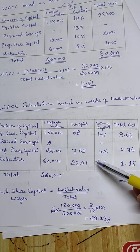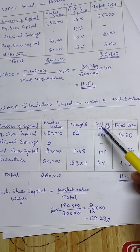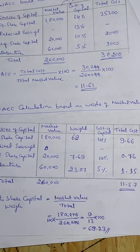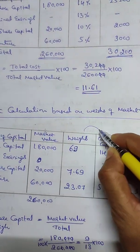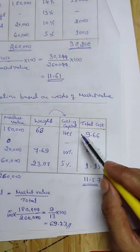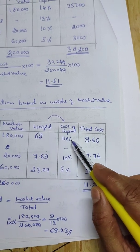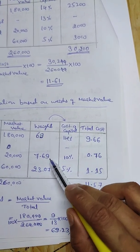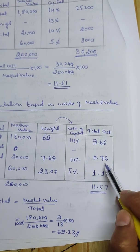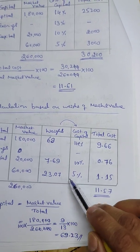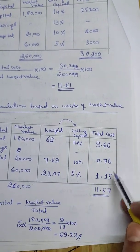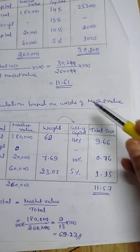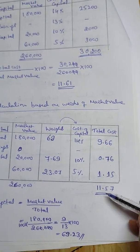Then the cost of capital: weights multiplied by cost of capital. We use total cost. Weighs into cost of capital: 9.66, then 7.69 into 10% gives 0.76, 23.07 into 5% gives 1.15. The total is coming to 11.57. Also 11.61 — so approximately 11.57.